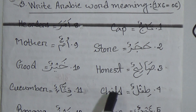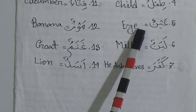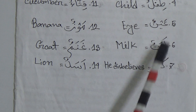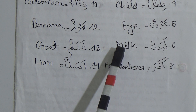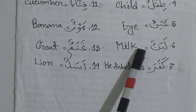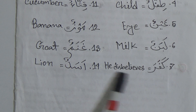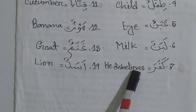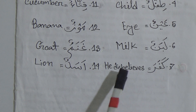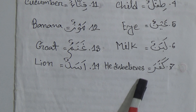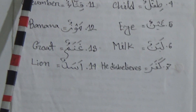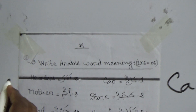Number 5: Aynun. Aynun means eye. Number 6: Labanun. Labanun means milk. Number 7: Kafara. Kafara means he disbelieves.